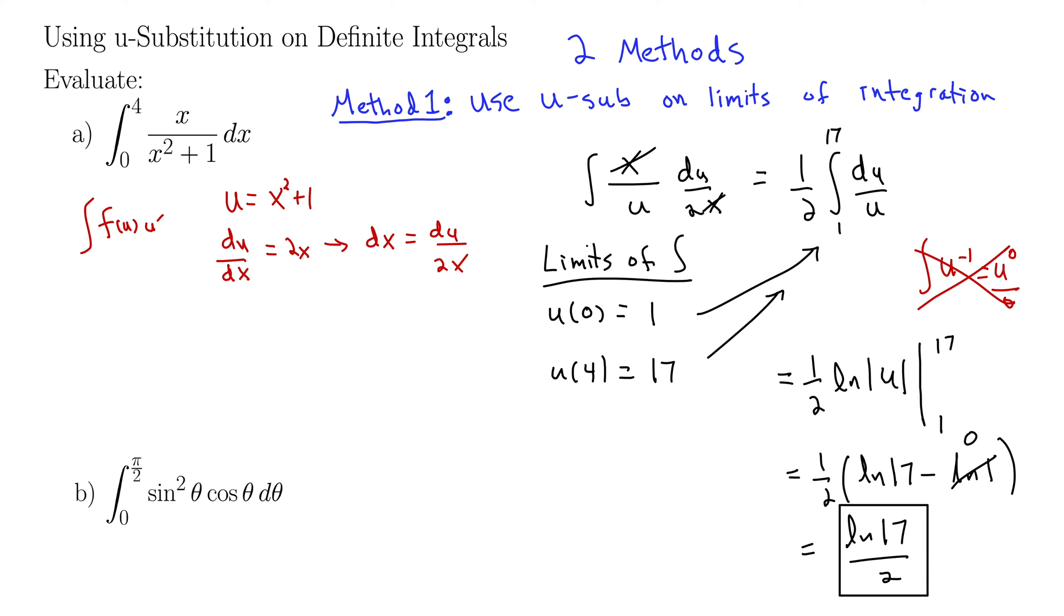Let's try another method where we save the u-substitution until the very end. So essentially, we'll back sub into x's and then evaluate using our original endpoints. In method 2, we convert the evaluated integral back to x before evaluating the limits of integration. So let's pick back up on our integral here where it's du over u and then we had a 1 half out front.